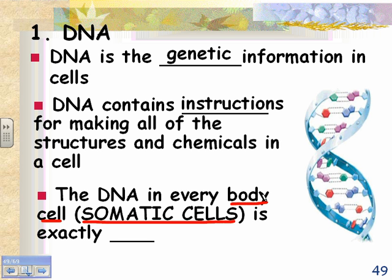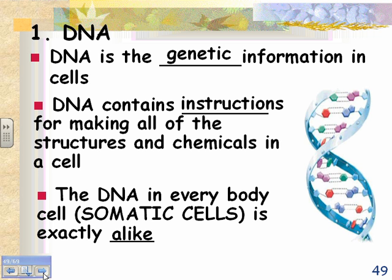The DNA in every body cell is exactly alike — identical. So the DNA in your skin cells is exactly the same as the DNA in your osteocytes, which are your bone cells. The reason those cells are different is that they read different parts of the DNA.